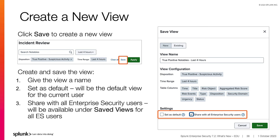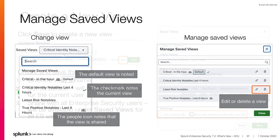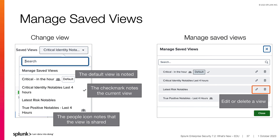In the Save View window, give the view a name and select the following settings as needed. Set as default, which sets the view as the default for the current user. Share with all Enterprise Security users, which makes the view available under Saved Views for all ES users. Views are available under the Saved Views dropdown. You can easily see which view is the default, which is the current view shown with a checkmark, and which views are shared, shown with a people icon. To change the current view, select it from the list. To edit a view, select Manage Saved Views. Use the pencil icon to edit the view or the trash icon to delete the view.